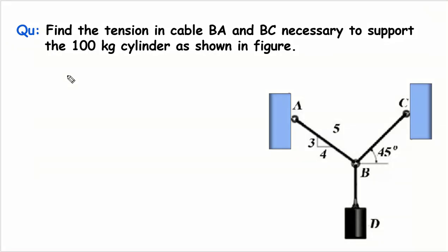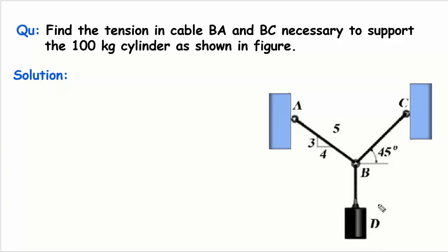Hello friends, we would like to solve a problem based on Lamy's theorem. So let me read the question: find the tension in the cable BA and BC necessary to support the 100 kg cylinder as shown in the figure. There's a cable BA and a cable BC, and they are supporting a cylinder which is suspended through point B. So the weight of the cylinder is 100 kg, and we have to solve this particular problem.